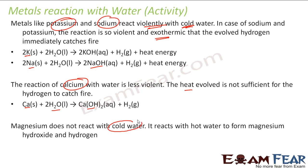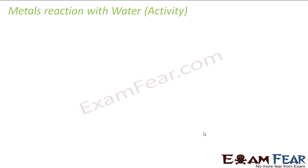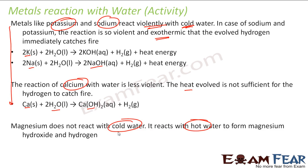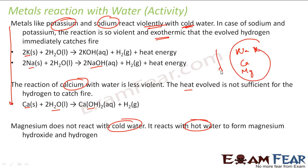Magnesium does not react with cold water — it reacts only with hot water. So calcium reacts with cold water while magnesium reacts only with hot water to form magnesium hydroxide and hydrogen. From this we can see that calcium is more reactive than magnesium, and we can create this kind of series.